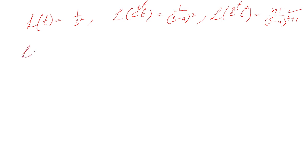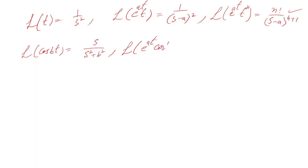Similarly, the Laplace transform of cos(bt) is s over (s squared plus b squared). When we multiply with the exponential e^(at), the Laplace transform of e^(at) cos(bt) becomes (s minus a) over (s minus a) squared plus b squared.